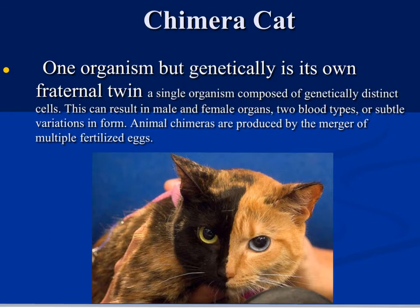Here we have an unusual cat called a chimera cat. This is an organism that is genetically its own fraternal twin — a single organism composed of genetically different cells. They can have both male and female organs, or two blood types. You'll notice the distinct coloration that allows us to identify this as a chimera cat. Animals that are chimera are produced by merging multiple fertilized eggs together.